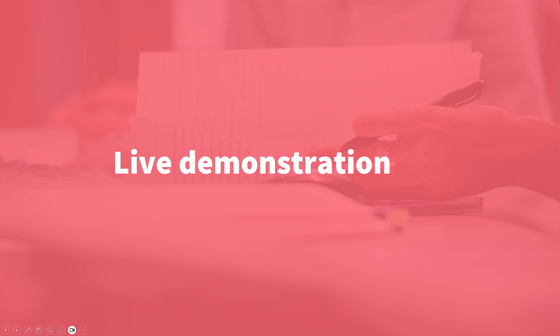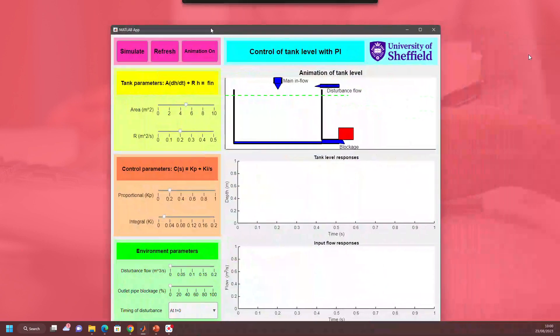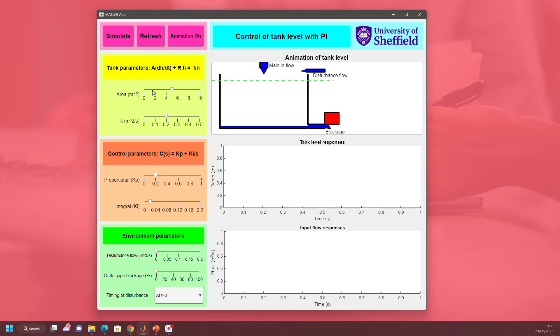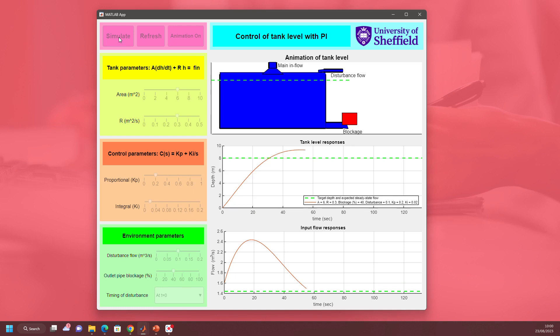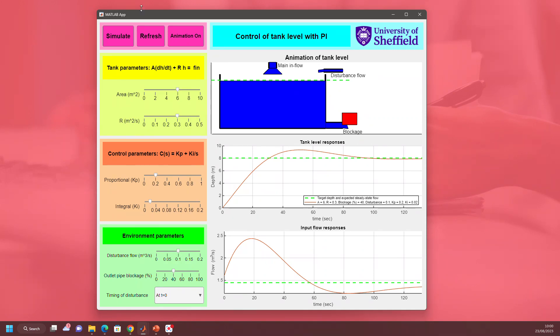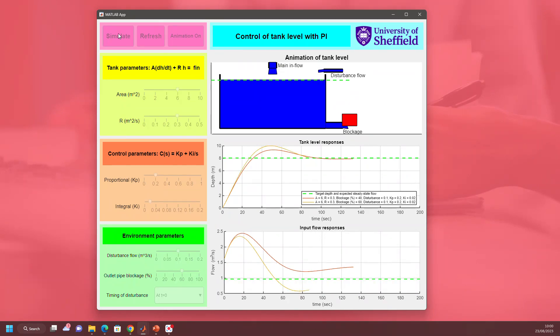Here's the app with simple sliders. We can change the size of the tank area, the size of the outlet, the disturbance flow, and the size of the blockage. I've got PI parameters set down here, KP and KI. Let's simulate and see if this does what I want. That performance isn't particularly good - I've got overshoot and it's oscillating all over the place. What happens if I increase the blockage to 60%? The behavior's even worse.